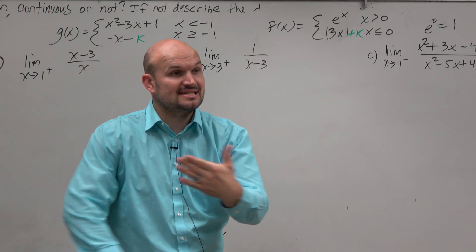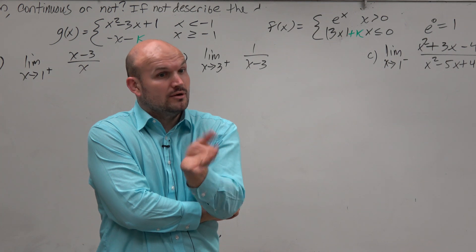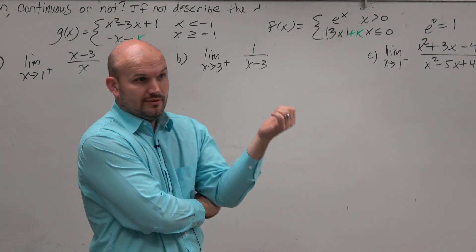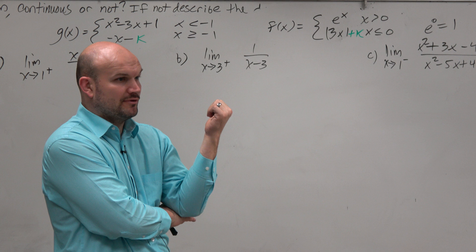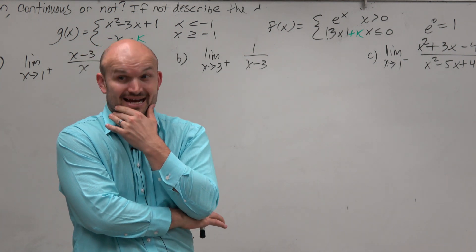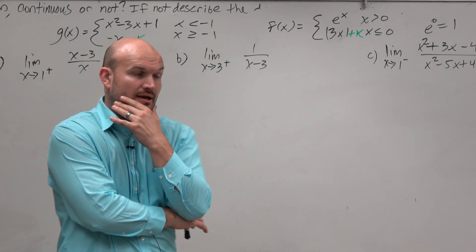So we need to understand, is that discontinuity an asymptote or a hole? Well, if it's a hole, it's removable. There's nothing I can do to really remove that x minus 3 from the denominator, right? So that is an asymptote.